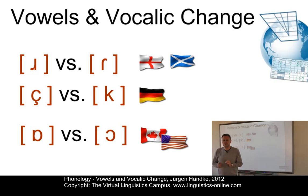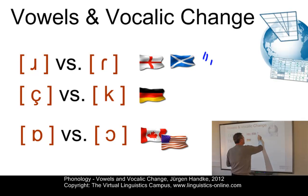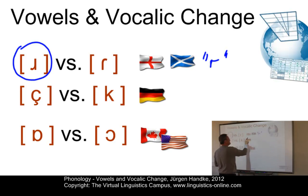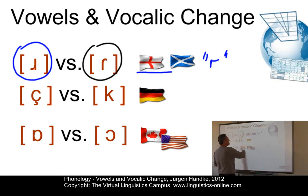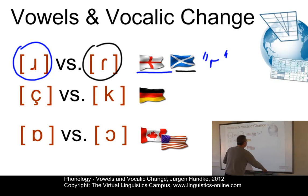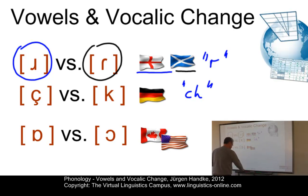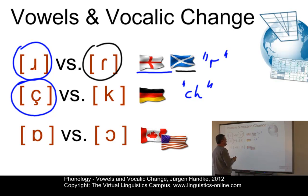Depending on the English dialect you speak, you might realize orthographic R either as an alveolar approximant, as in RP, or as an alveolar flap, as for example in Scottish English. Or take the German orthographic CH, especially at the beginning of words. In standard German, you might use the palatal fricative, as in China, Chemie — China, chemistry.